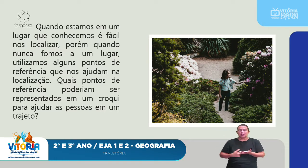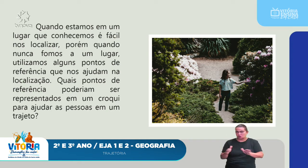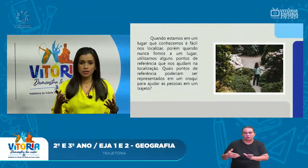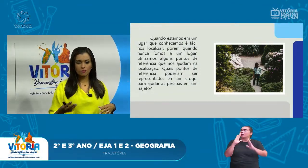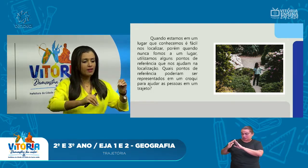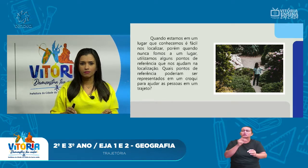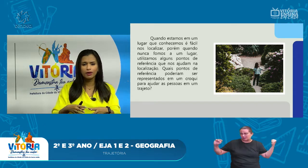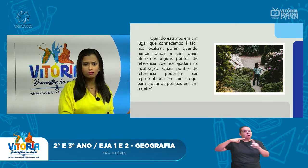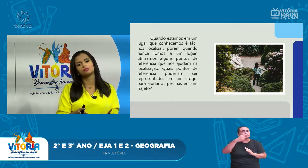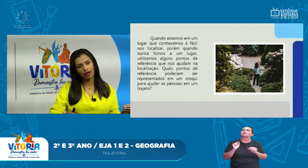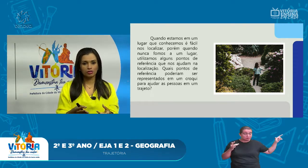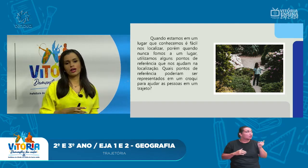I can draw my own house, I can draw the school where I work, I can draw the street I walk on. So if you were to draw a route — a croqui from your house to the school — which reference points would you include in that croqui? A very large house that has been there for a long time? A church? A bakery? What you include helps someone who has never been there to better navigate to your school.